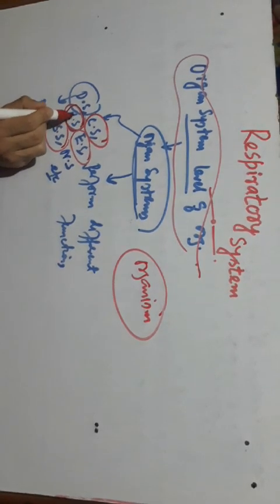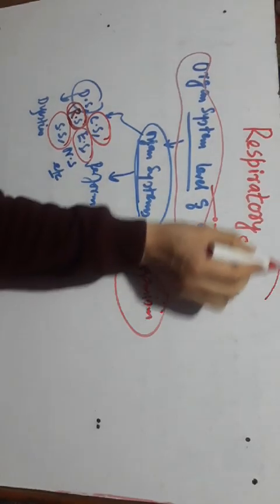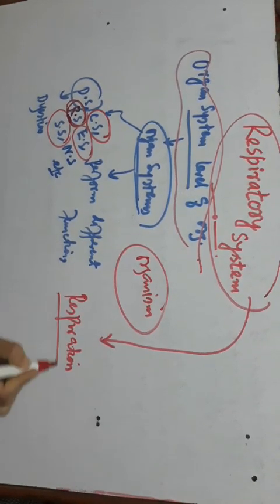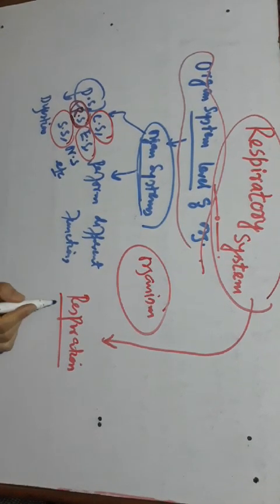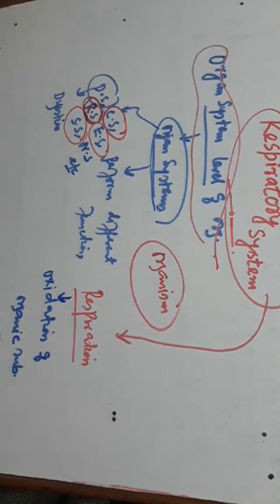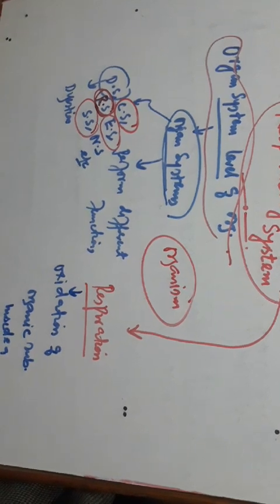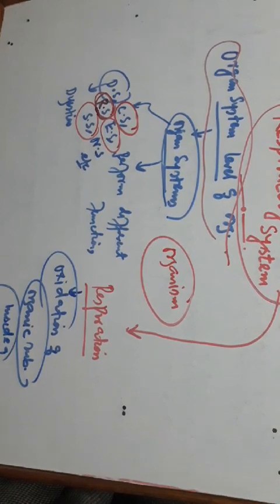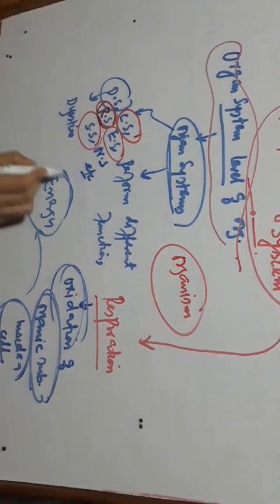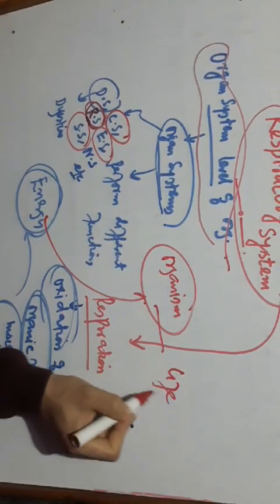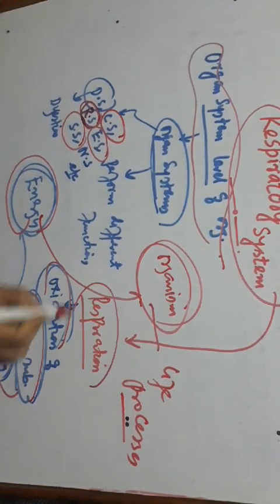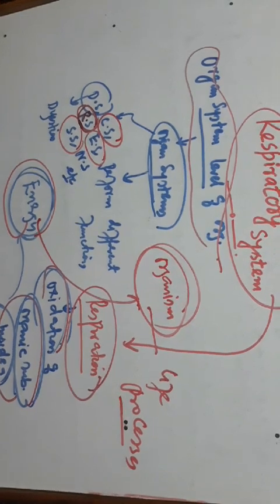One important system is the respiratory system. It carries the process of respiration. Respiration is defined as the oxidation of organic substances inside a cell. Once oxidation of organic substances occurs inside a cell, energy is liberated. This energy is used by the organism to carry out various life processes.